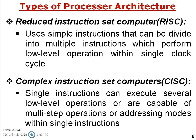The CPU or processor is based on either RISC — Reduced Instruction Set Computer — or CISC — Complex Instruction Set Computer. RISC uses simple instructions that can be divided into multiple smaller instructions, which perform low-level operations within a single clock cycle. One cycle is generated and the instruction is divided into smaller multiple instructions to perform the low-level operation.